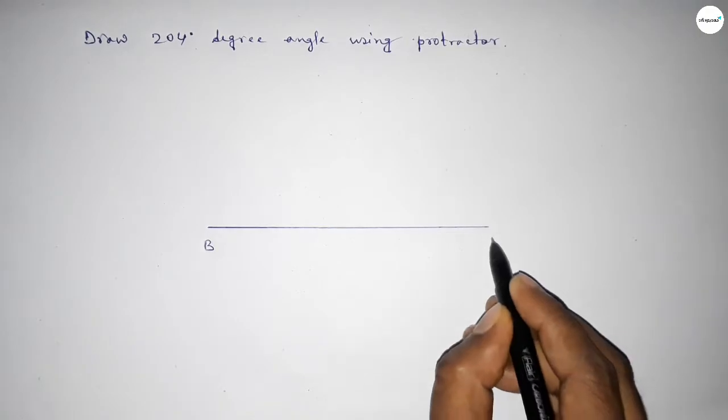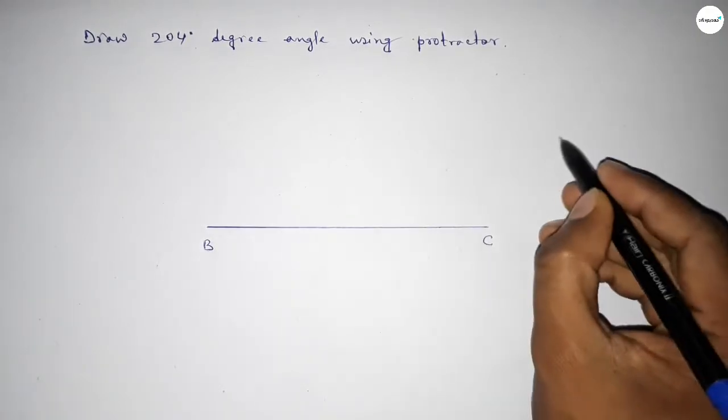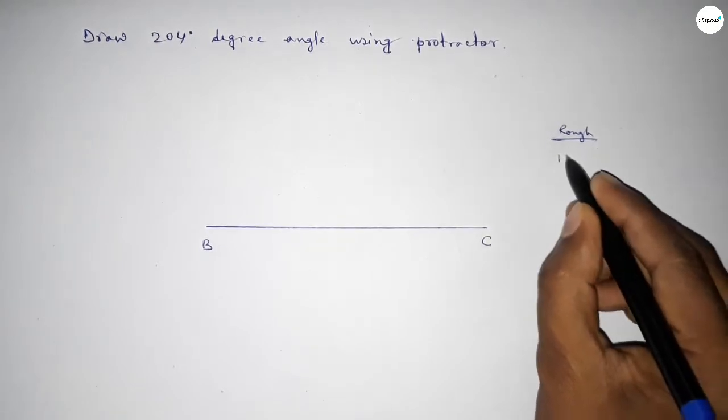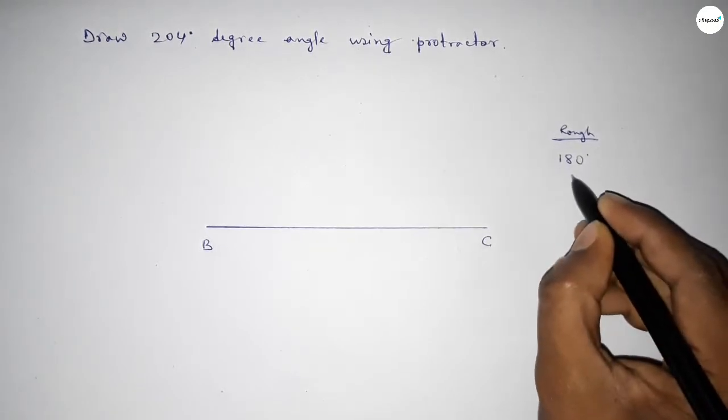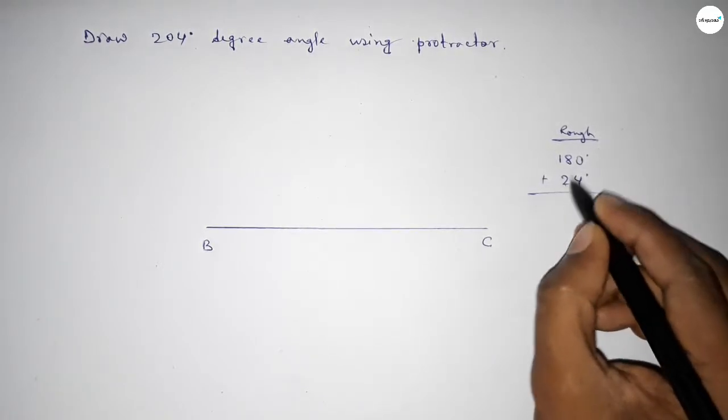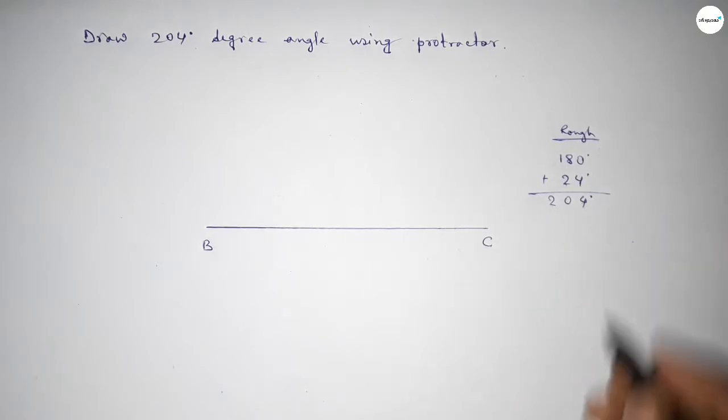Taking here point B and here C. Now roughly discussing some calculation here. So if we add 24 degree angle with 180 degree, then we can get 204 degree. So this is 4, 10, and carry 1, so 2.